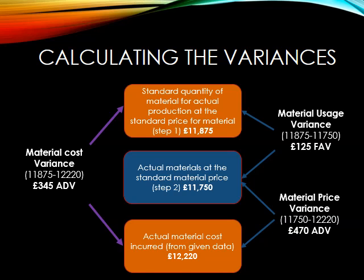We must have paid a higher price per kilogram for these materials than expected. Importantly, if we take the materials usage variance and add it to the materials price variance, we end up with the same figure as our materials cost variance. This isn't surprising because all we're doing is taking that materials cost variance and splitting it into two elements. That's how we calculate our materials variances.